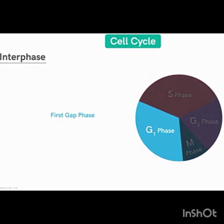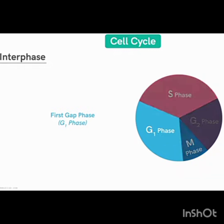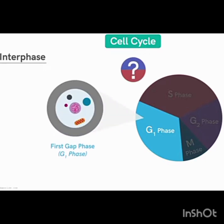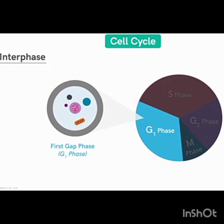The first phase is G1 phase. G1 phase lies between M phase and S phase. In G1 phase the cell is growing in size — as you can see the white structure growing. After growing in size, the nucleolar content will double.